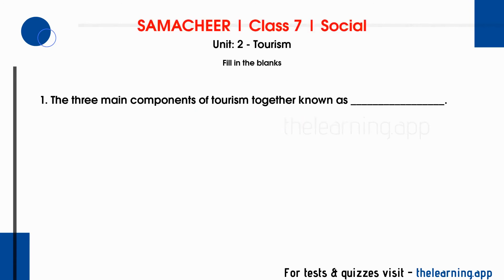The three main components of tourism together are known as dash. The correct answer is the A3 concept. The main components of tourism are Attraction, Accessibility, and Amenities. These three main components form the A3 concept of tourism — attraction refers to the tourist spot, accessibility to the mode of transport.